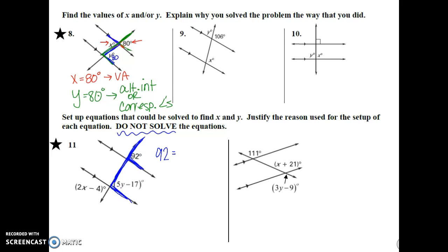Because those are corresponding angles. The other thing that I notice is that I have this 92, and I could put it with the X right here. And those don't make any letter at all, but they are both outside. So I know that 92 is equal to 2X minus 4 by alternate exterior angles.